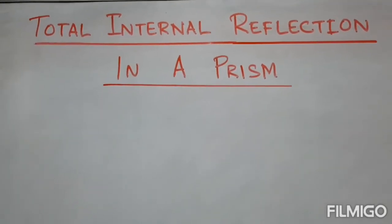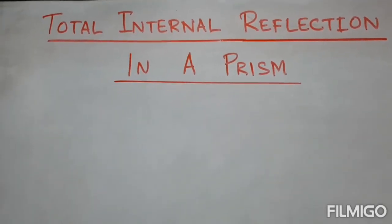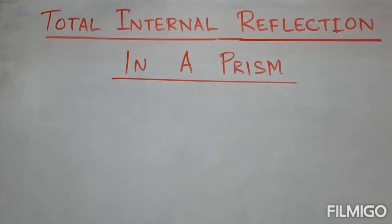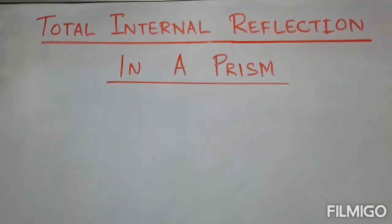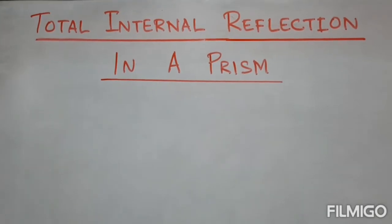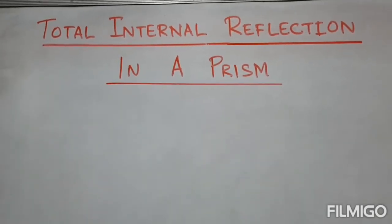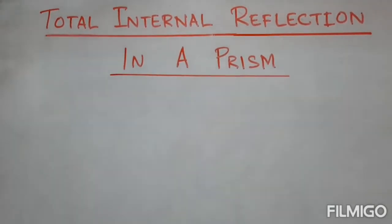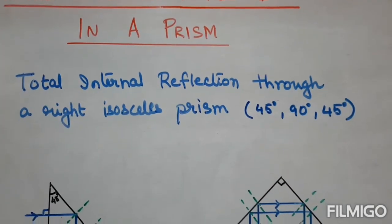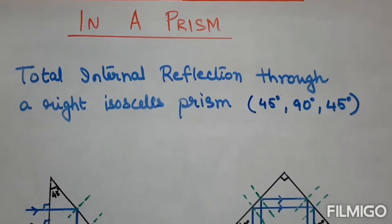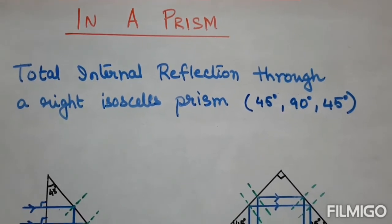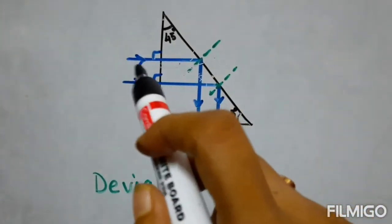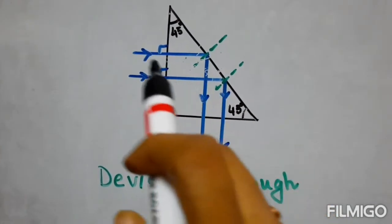Total internal reflection in a prism is used in a periscope of a submarine, and also in binoculars and cameras to invert the image without any loss of intensity. It is also used in slide projectors. Internal reflection through a right isosceles prism whose interior angles are 45-90-45 is demonstrated.